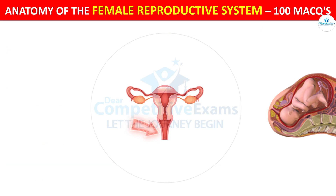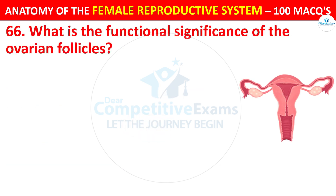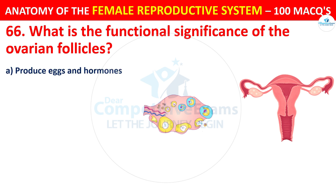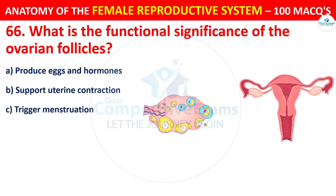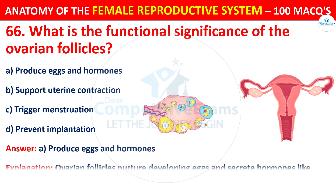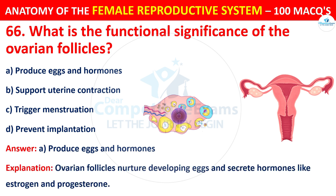Question number 66. What is the functional significance of the ovarian follicles? The correct answer is A — to produce eggs and hormones. Ovarian follicles nurture developing eggs and secrete hormones like estrogen and progesterone.